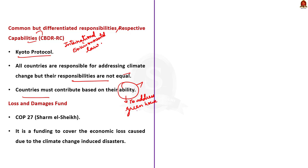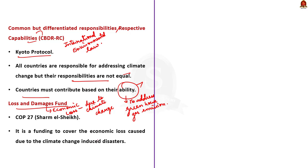Moving on to the loss and damage fund. The phrase 'loss and damage' refers to economic losses caused due to climate change-induced disasters. Climate funding so far has focused mostly on cutting carbon dioxide emissions, and till now developed countries had not paid for damages caused due to climate change-induced disasters to vulnerable countries. The loss and damage fund specifically covers the cost of damages that countries face due to climate change. This fund was established as part of COP27 held in Sharm El-Sheikh, Egypt.